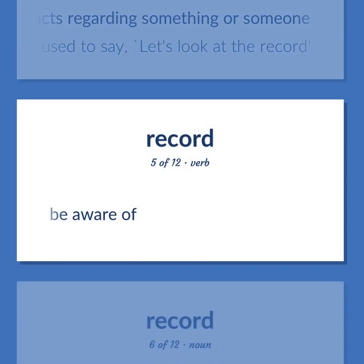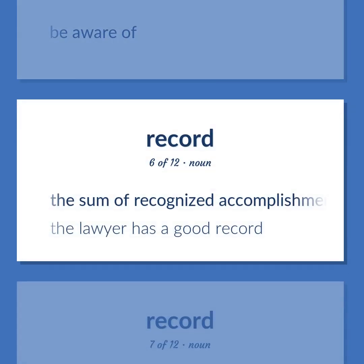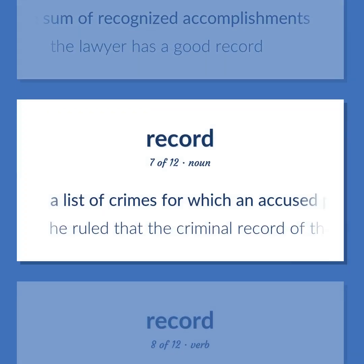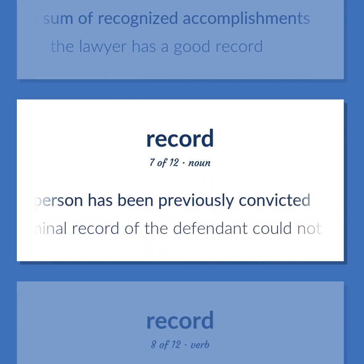Be aware of. The sum of recognized accomplishments — the lawyer has a good record. A list of crimes for which an accused person has been previously convicted. Example: He ruled that the criminal record of the defendant could not be disclosed to the court.